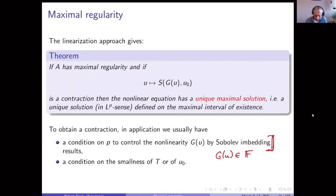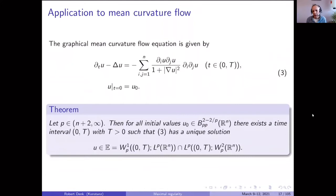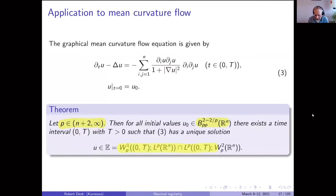Applying this to the mean curvature flow in the graphical situation: there is a condition on p needed for embeddings, the initial value lies in a Besov space (the real interpolation space), and we obtain a unique solution in the canonical parabolic solution space — order-one Sobolev in time and order-two Sobolev in x — from maximal regularity of the Laplace operator.